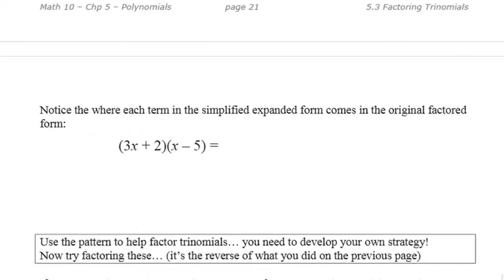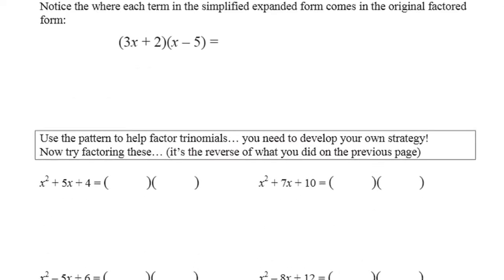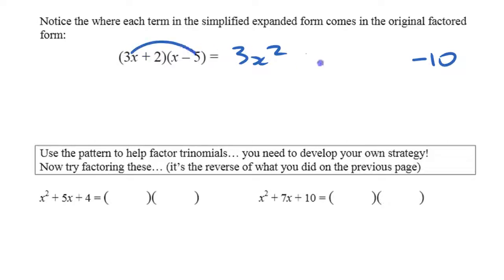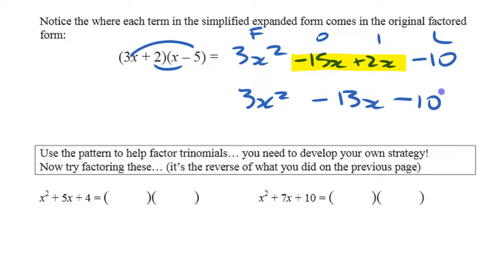Now let's look at the opposite — going back to the pattern. Notice where each term comes from. You get 3x squared as the first term, minus 10 as the last term, and if you write it out as four terms you have minus 15x and plus 2x as the two middle terms. Those come from four places: the first, the last, the outside, and the inside.